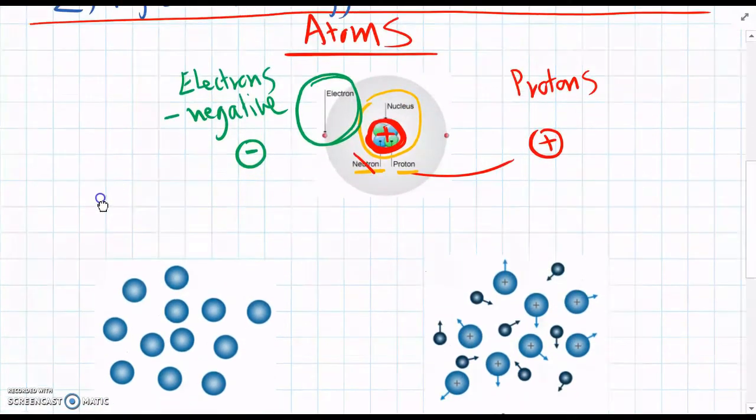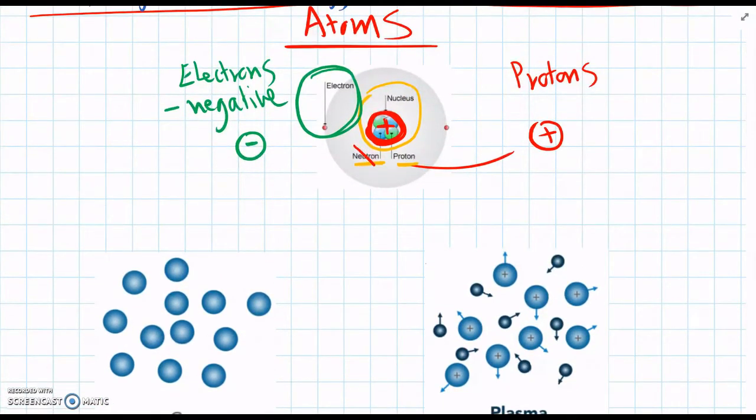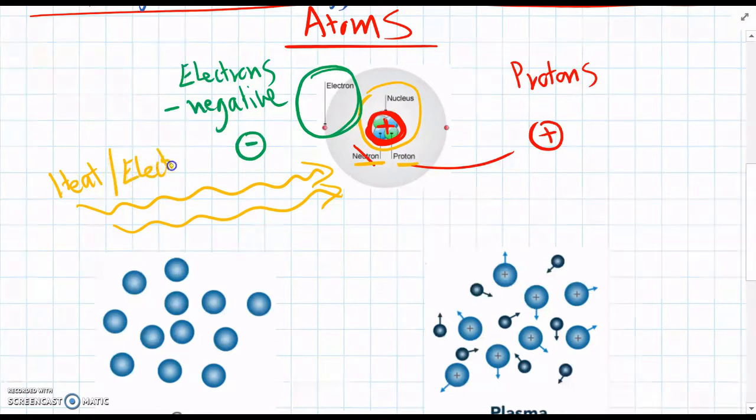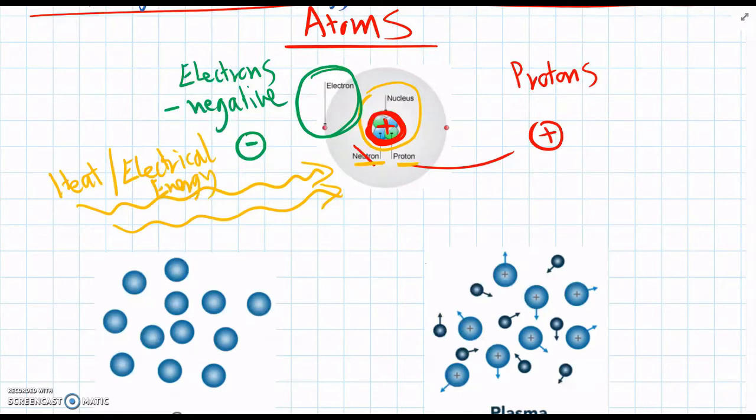And what scientists have discovered is that if there's enough heat, or enough electrical energy that comes in, which is what we mentioned before, if we have enough heat or electrical energy, then some of the electrons can actually fly off and be taken away from the atom, where normally they'd stay flying around inside it.